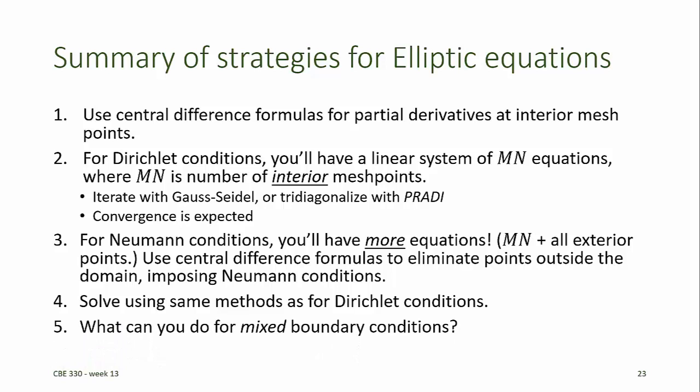If we have mixed boundary conditions, we know the values of the dependent variable at some points on the boundary but not at others, so we only need to eliminate exterior mesh points on the parts of the boundary where we have the Neumann boundary conditions. When we have irregular boundaries, we can still use the finite difference equations, but they need to be reformulated to account for a changing step size. In the next video, we'll develop numerical methods for solving parabolic partial differential equations.